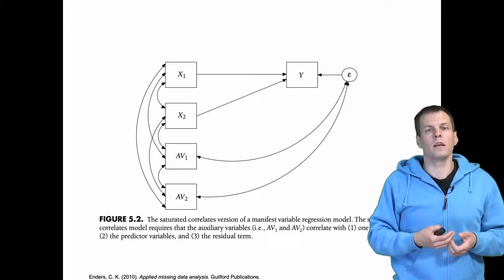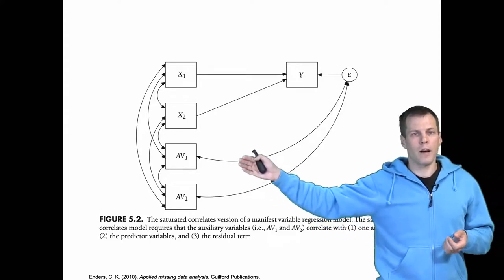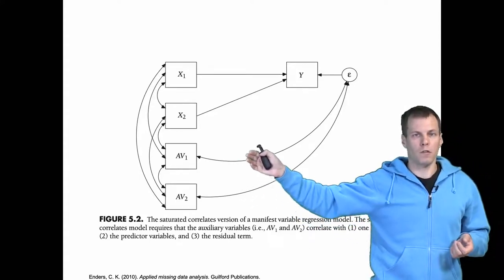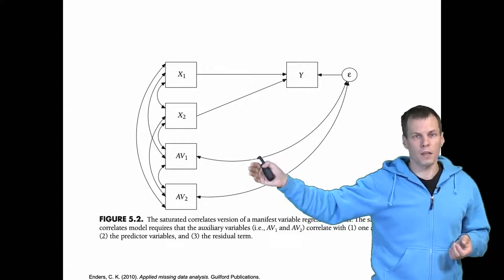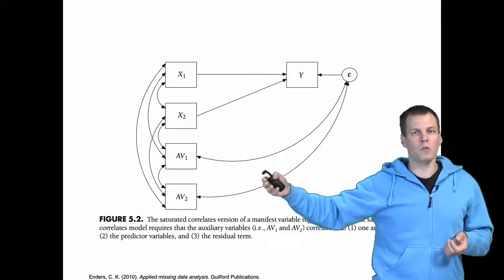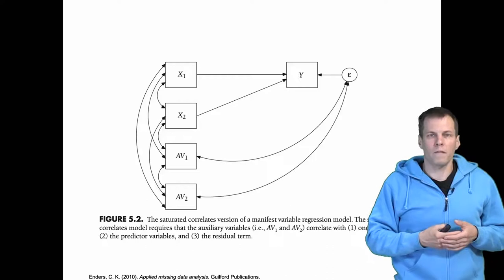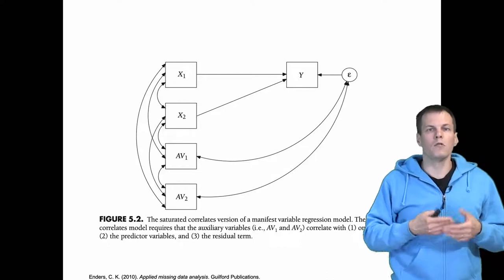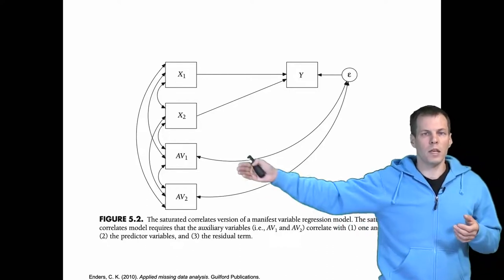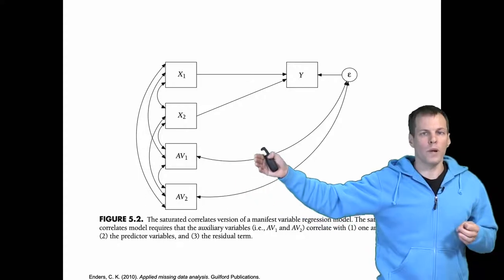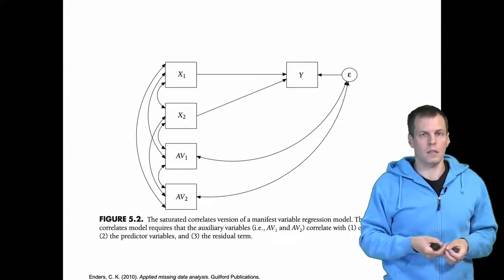But interestingly, even if we have these variables that don't affect the path coefficients, don't affect the model fit, simply by adding them to the model allows the FIML algorithm to use the information from these variables to compensate for missingness. And that's a nice thing to have.